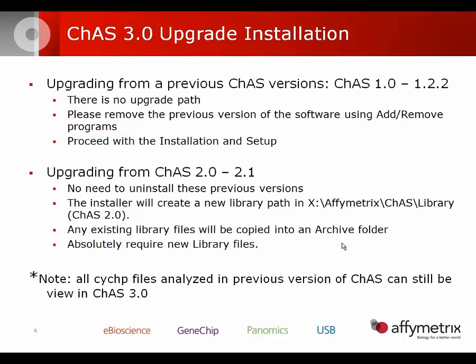If you are running CHAS 2.0, the installer will create a new library path on whichever drive you're installed on, for example C:\Affymetrix\Chas\Library. Any existing library files will be copied into an archive subfolder within that path. In CHAS 3.0, it is absolutely required to have new library files due to the new APT2 framework. All chip files that were previously analyzed can still be viewed in CHAS.